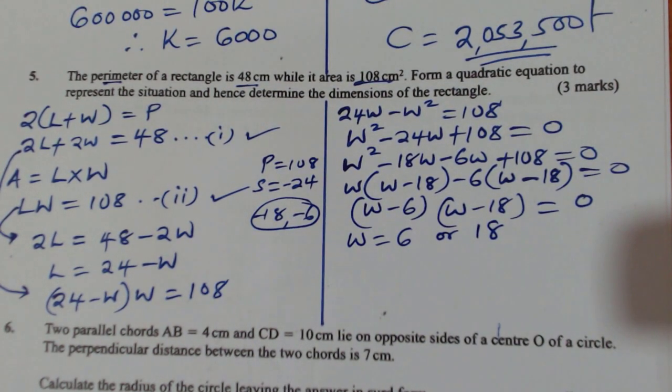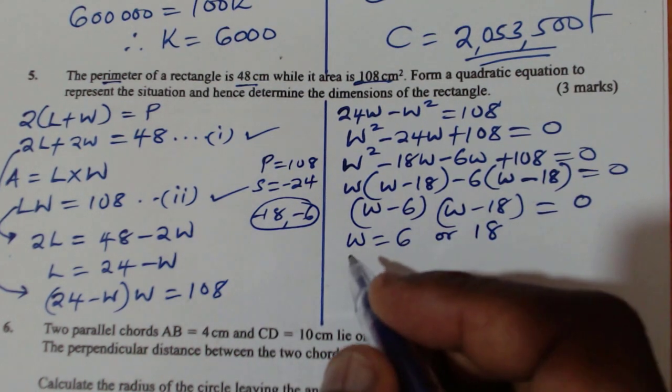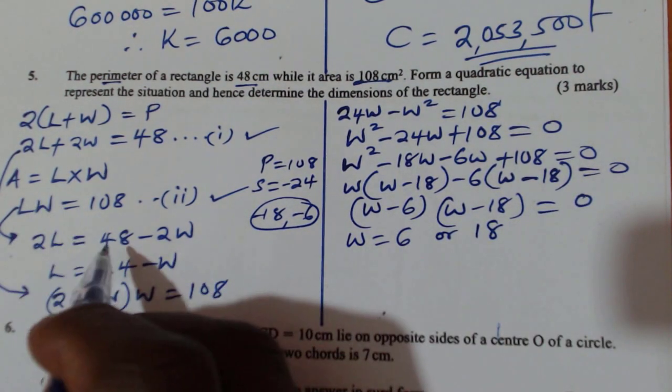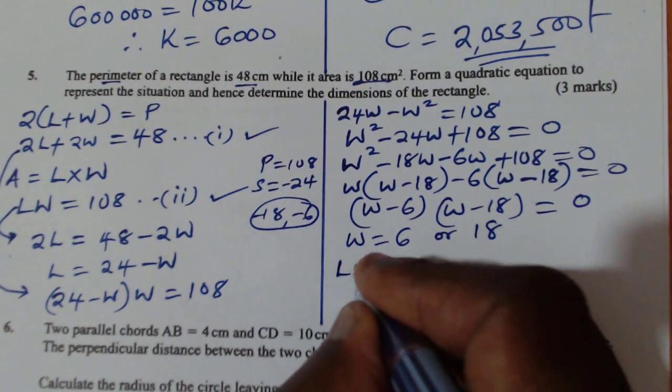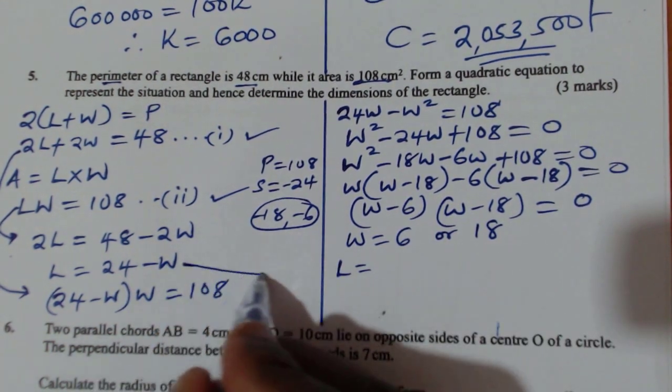So you have to decide which one will be the actual width. In a rectangle, the length is always longer than the width. So given that, let's see. L equals, from this expression here, equals 24 minus W.